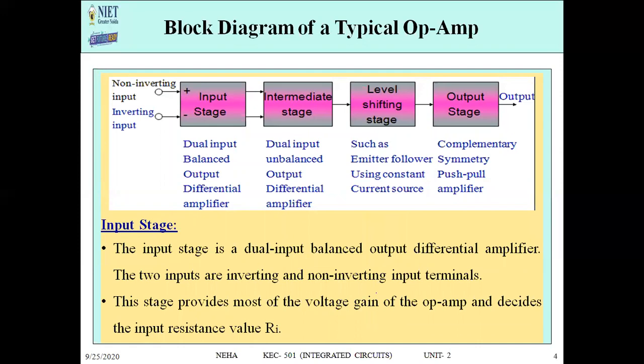Now let us talk about the block diagram of the OPAM. As we have said, the OPAM is designed by interconnecting different amplifier stages. We have four stages. The first one is the input stage. In the input stage, we put two inputs, because OPAM is a differential amplifier and the differential amplifier amplifies the difference of two inputs. So we have two inputs in the input stage.